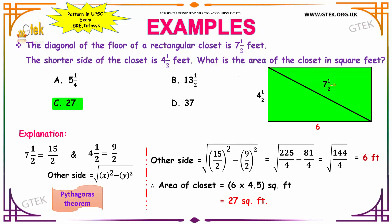We have the length of the diagonal of the rectangular closet as 7.5 feet, which is in mixed fraction. Converting it, you have 7.5 feet, which is 14 plus 1, that is 15, by 2.